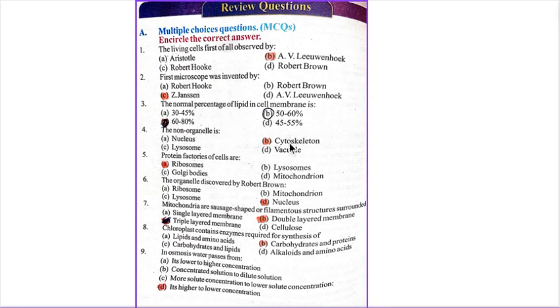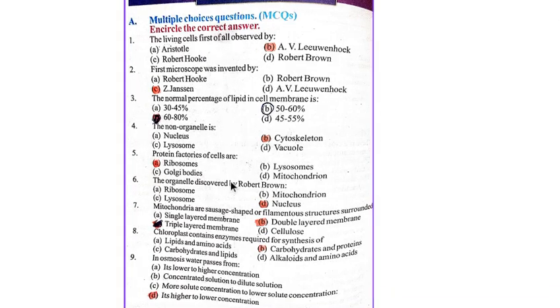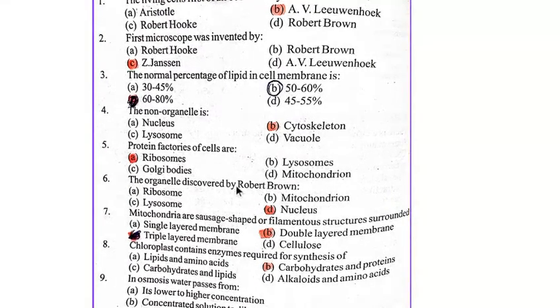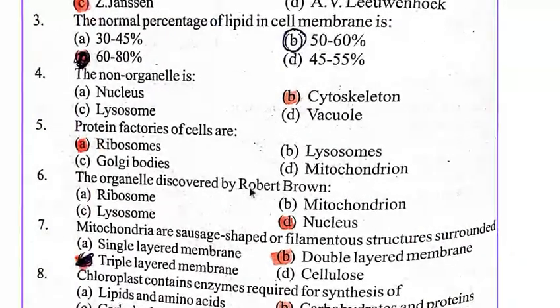The non-organelle is B. Cytoskeleton. Protein factories of cell are A. Ribosomes. Organelle discovered by Robert Brown was D. Nucleus.